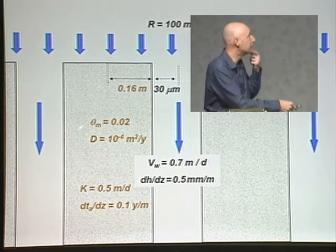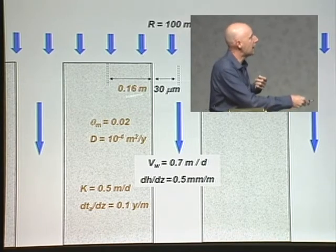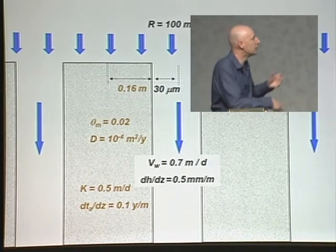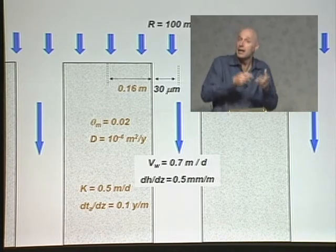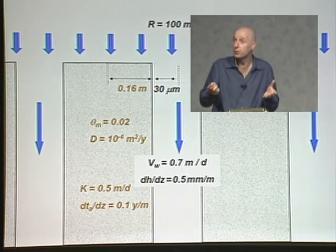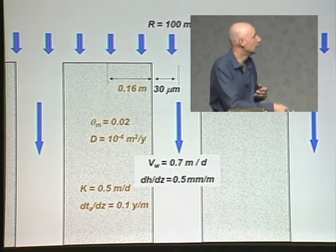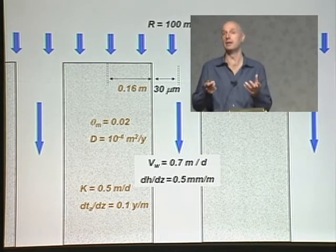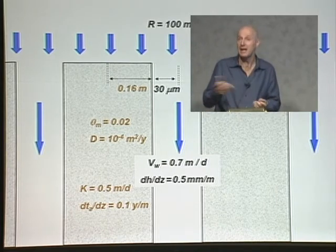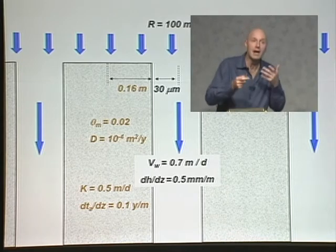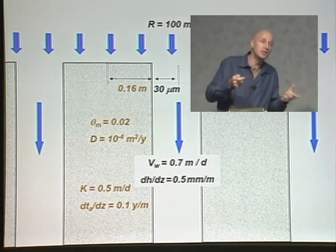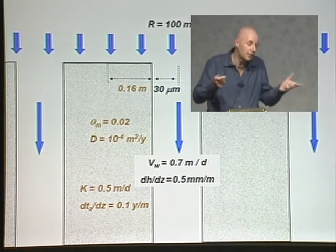So we solve those equations. We calculate the head gradient actually is consistent with what we measure, which is encouraging. We calculate a velocity of water through the fractures, a fracture aperture, and we calculate a recharge rate, which turns out to be a sensible sort of number, which was really encouraging. Rainfall in the Clare Valley is about 600 millimetres per year. We calculate with this approach a recharge rate of about 100 millimetres per year. So that's a believable sort of number, it's the sort of number we'd expect.